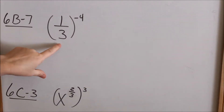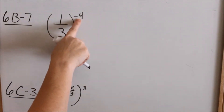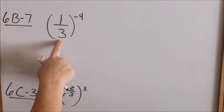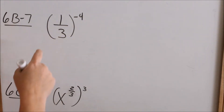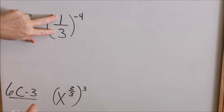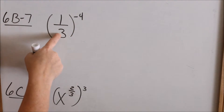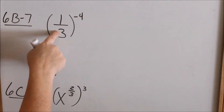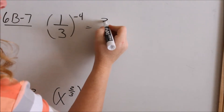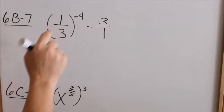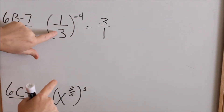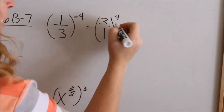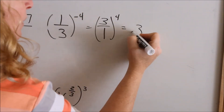Now look at 6B7. You have 1/3 to the negative 4. You've already done negative exponents — when you change the place of the base, you change the sign of the exponent. Now we have a fraction. When you have a negative exponent with fractions, it basically takes the reciprocal of the fraction, because I want to move the 3 up to the top and the 1 down to the bottom. So it becomes 3 over 1 — to make it a positive exponent, you're taking the reciprocal. So you have 3 over 1 to the 4th, which is the same as 3 to the 4th.